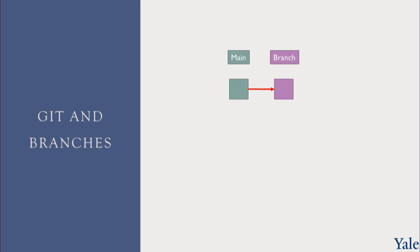A branch is a copy of the code — so the purple thing is now a copy of the code. You work on the branch and implement a new feature. In the meantime, your colleagues are working on the main branch and they add new features as well. At some point, we merge back — we take our changes and merge them back into the main branch, reincorporating the work done on the side branch into the main flow of the program, at which point the branch gets deleted.